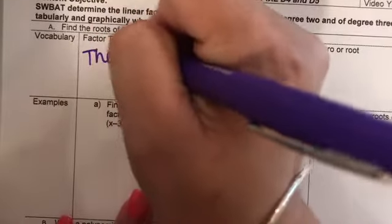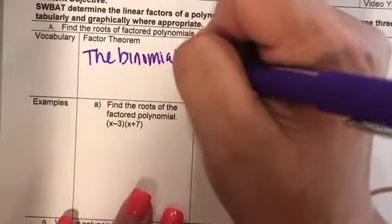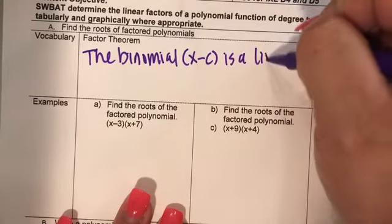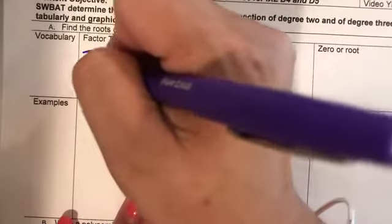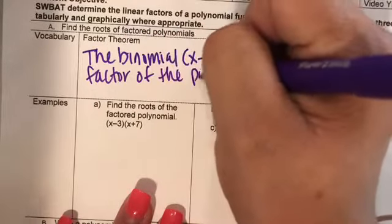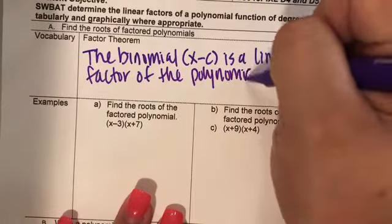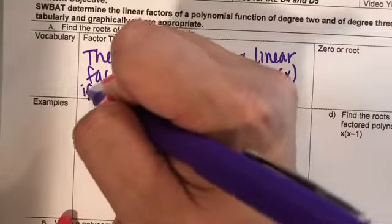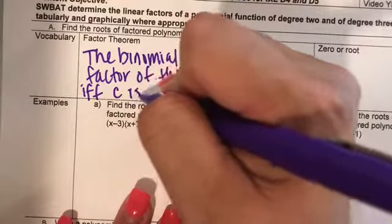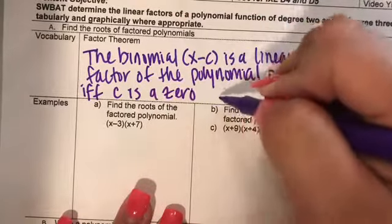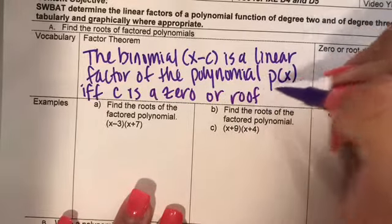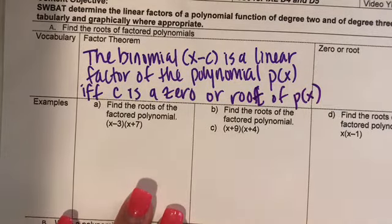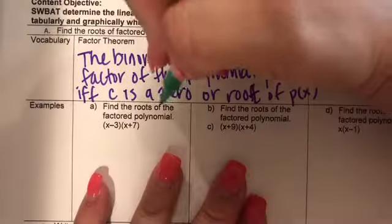What we're going to say is: the binomial X minus C is a linear factor of the polynomial P of X if and only if C is a zero or root of P of X.